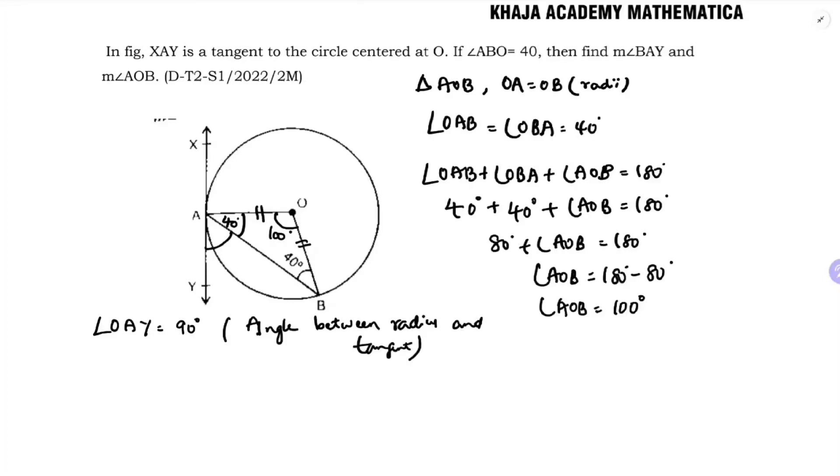Angle OAY equals angle OAB plus angle BAY equals 90 degrees. But OAB is 40 degrees, so angle BAY is 90 degrees minus 40 degrees. Therefore, angle BAY is 50 degrees.